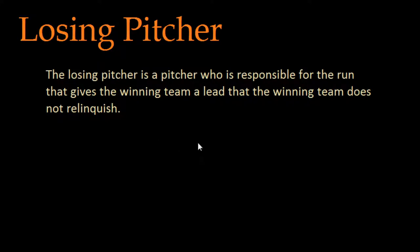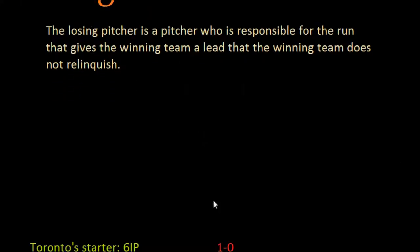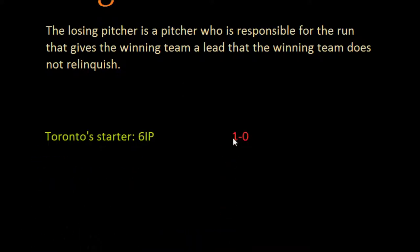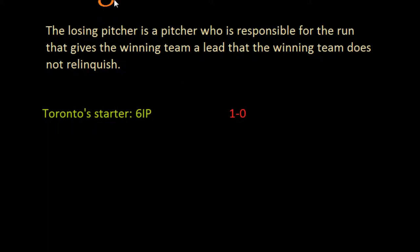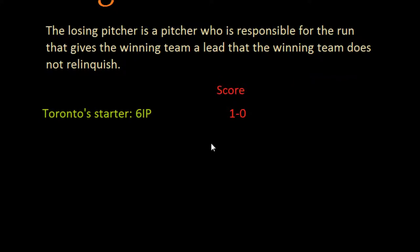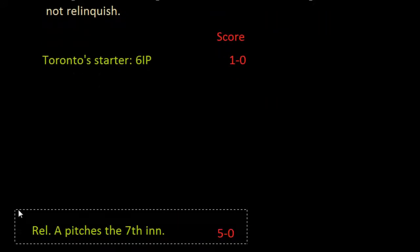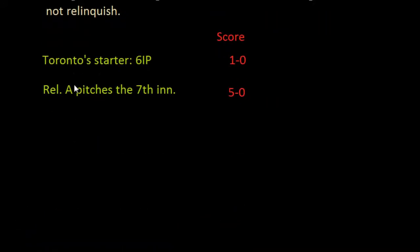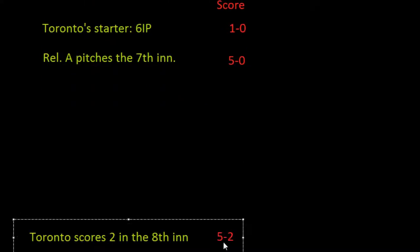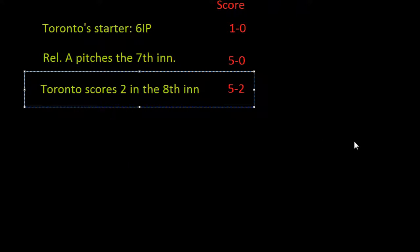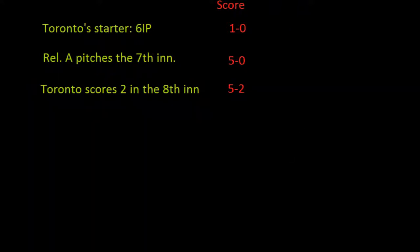But that's not always the case, so let's look at a quick example. If Toronto's starting pitcher gave up just one run and pitched six innings, the score would be one to nothing after the sixth. Toronto then brings in a relief pitcher who gives up four more runs in the seventh inning, making it five to nothing Boston. Then in the next inning Toronto scores two runs, so after eight innings it's five to two, Boston winning.